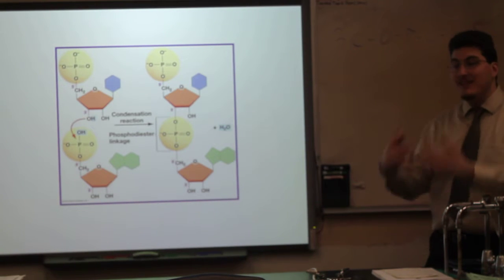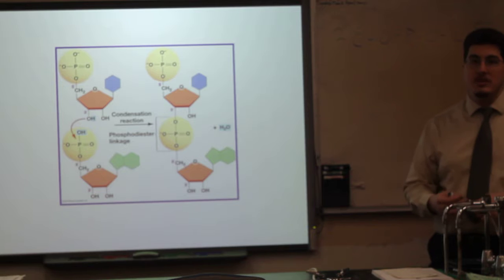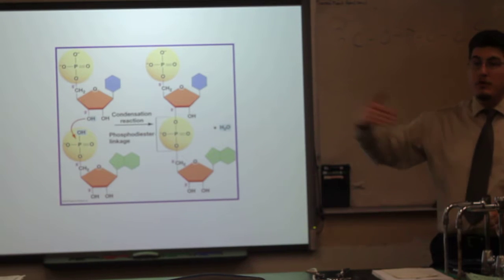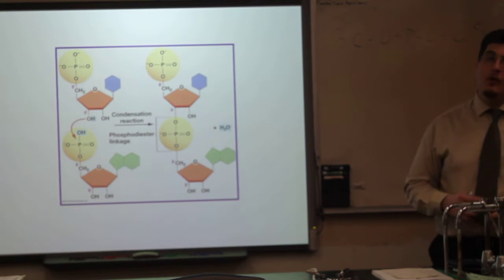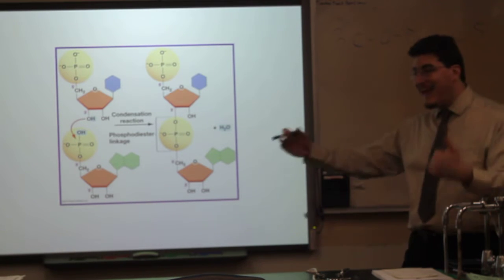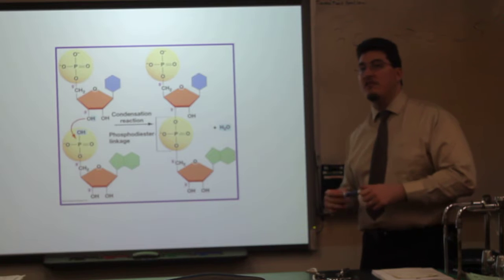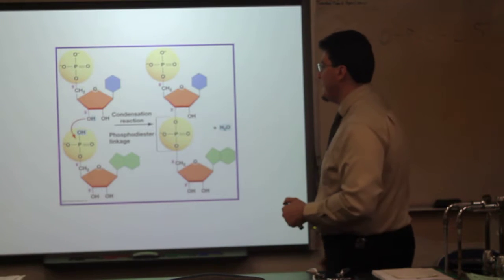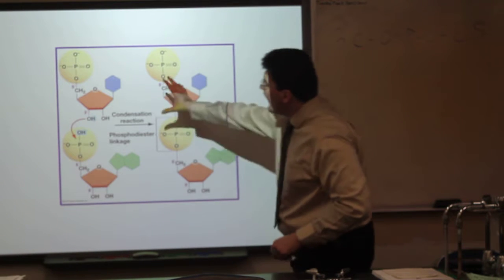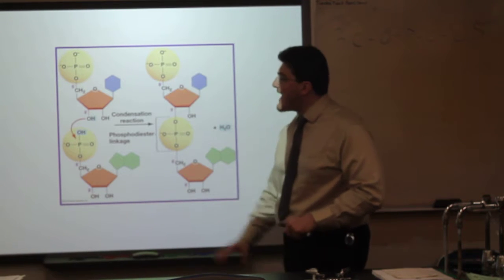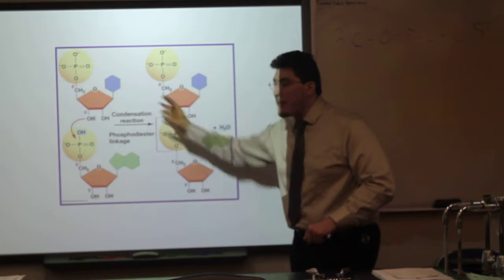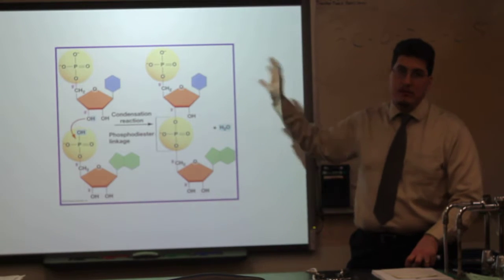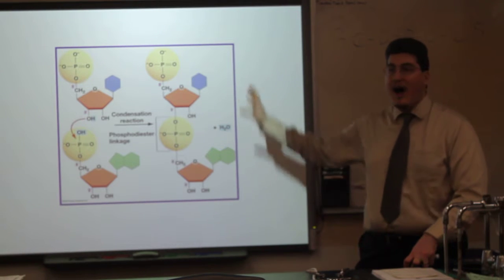ATP, TTP for DNA, UTP for RNA, GTP and CTP versions are your activated nucleotides. These have enough high-energy bonds to move that reaction forward and extend the chain that is DNA or RNA.